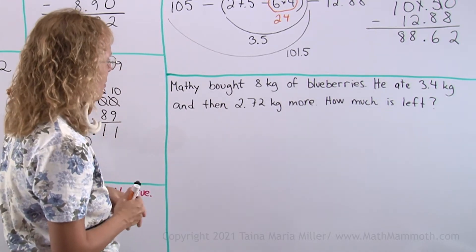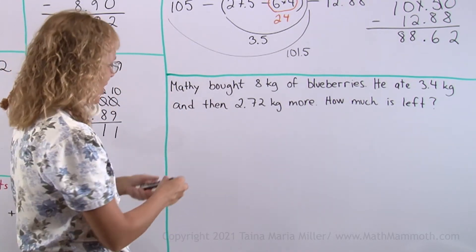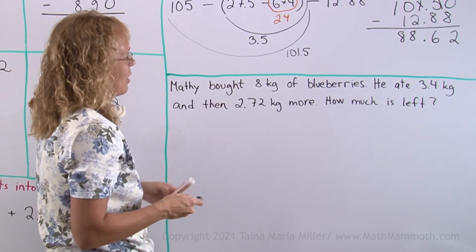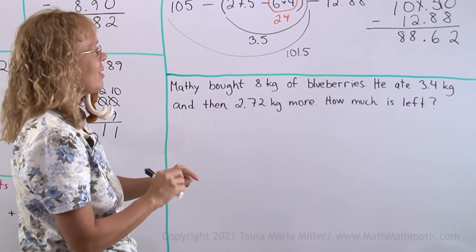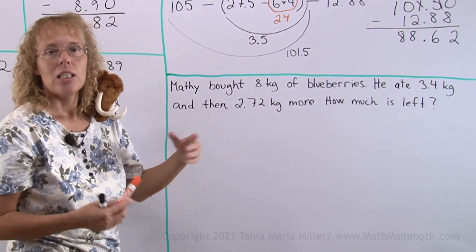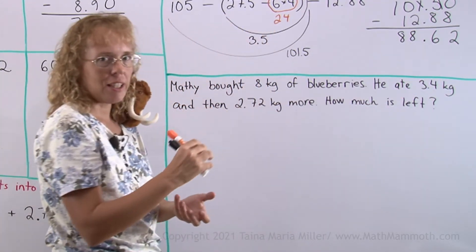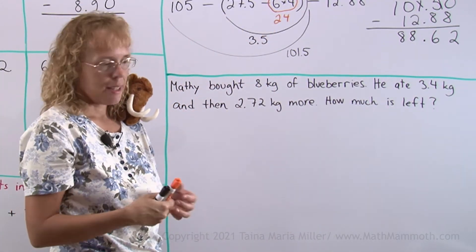You have a good appetite, but then again you're a mammoth, so I guess the portions are pretty big. You could either go 8 kilograms minus this minus that, or you could first add these two portions that he ate together and then subtract that from 8. I'll do that. Addition is easier anyway.